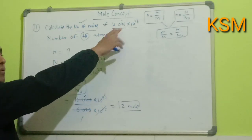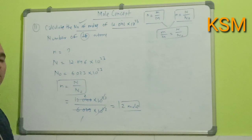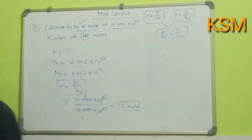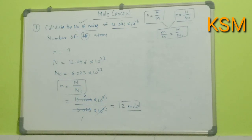Therefore, 2 moles equals 12.046 × 10^23 helium atoms. Thank you.